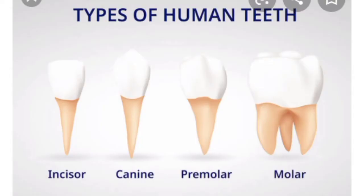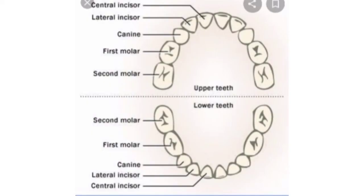So students, before discussing the process of digestion, let's discuss the types of human teeth. Teeth help us in chewing the food and breaking it into mechanically small pieces. Our teeth vary in appearance and perform different functions. Accordingly, they are of four types: incisors, canines, premolars, and molars.